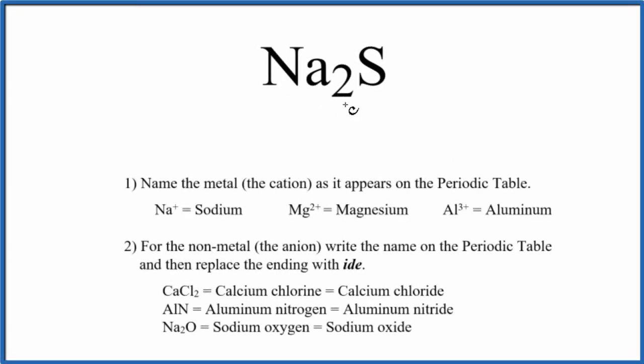To write the name for Na2S, we first need to realize what type of compound we have. Sodium is a metal, sulfur is a nonmetal. Metal and nonmetal—that gives us an ionic compound.